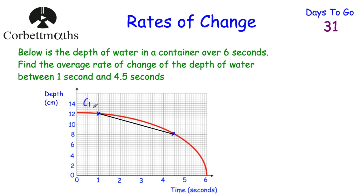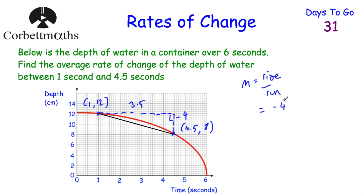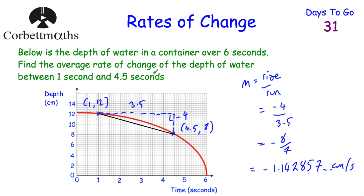Reading off the points: at 1 second the height is 12, giving point (1, 12). At 4.5 seconds the height is 8, giving point (4.5, 8). Drawing our right-angle triangle: the run is 3.5 (from 1 to 4.5), and the rise is −4 (going down from 12 to 8). So the gradient m = rise/run = −4 ÷ 3.5 = −8/7, or approximately −1.14 centimetres per second. That's the average rate of change of the depth of water between 1 second and 4.5 seconds.